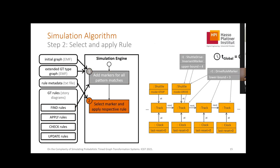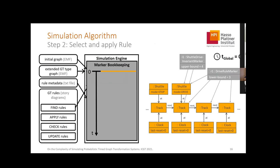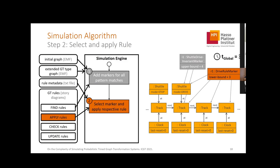In the second step, we select one marker and apply one rule. We have a special data structure that considers time. It stores all markers — invariant markers and rule markers — with their time constraints. Since all invariants must be fulfilled, the next rule application must occur somewhere between the current global time and the smallest invariant upper bound. The only rule found in this interval is R1, so we randomly select a new time, adapt the global simulation time, and apply the graph transformation rule.